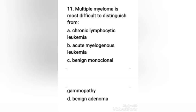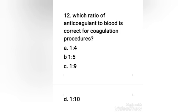Next question: multiple myeloma is most difficult to distinguish from — chronic lymphocytic leukemia, acute myelogenous leukemia, benign monoclonal gammopathy, or benign adenoma? The right answer is option C, benign monoclonal gammopathy. Benign monoclonal gammopathy has peripheral blood findings similar to myeloma; however, a lower concentration of monoclonal protein is seen, there are no osteolytic lesions, and plasma cells comprise less than 10% of nucleated bone marrow cells. About 30% become malignant, hence the term monoclonal gammopathy of undetermined significance (MGUS).